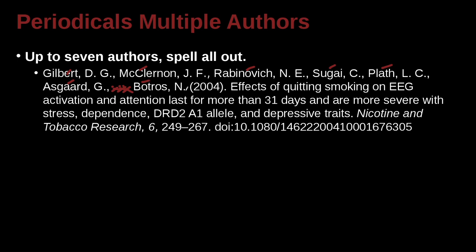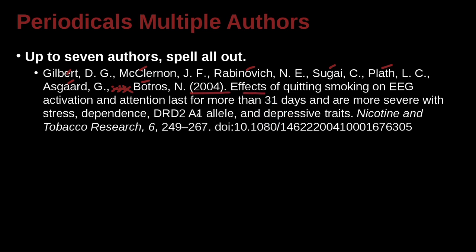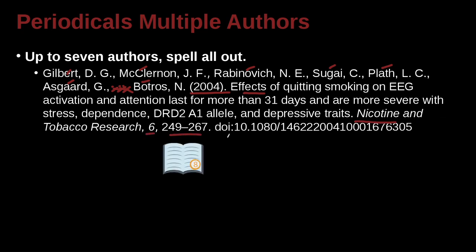And then what do you do? Just like normal, you have the date and you have the name of the article. And at the end of the name of the article, you're gonna go ahead and have the name of the journal. And then you're gonna have the journal's number and page and DOI.